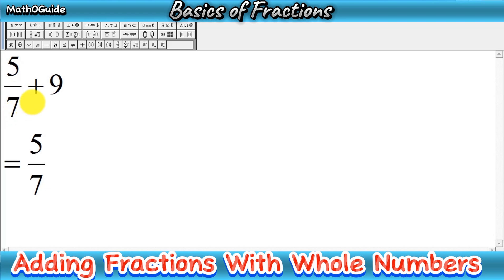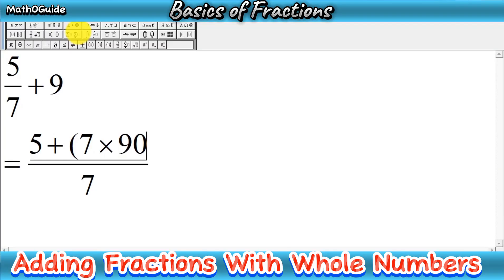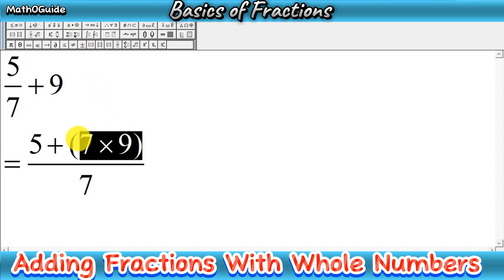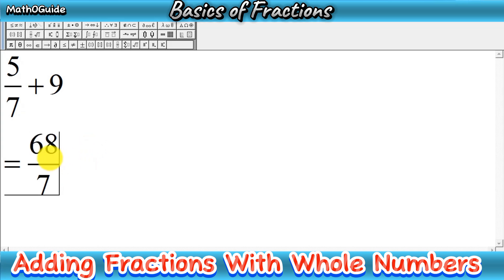Now you write the sign of addition or subtraction — we have a positive sign here. Then you multiply the denominator 7 of the first fraction by the whole number, which is 9. So you multiply 7 by 9. After multiplication, you simplify it: 7 times 9 gives us 63, and then you add 5 plus 63 to get 68. So the answer is 68 over 7.